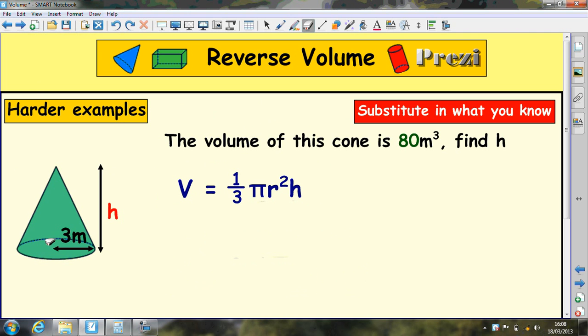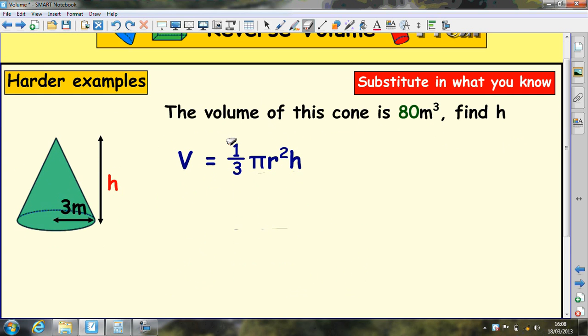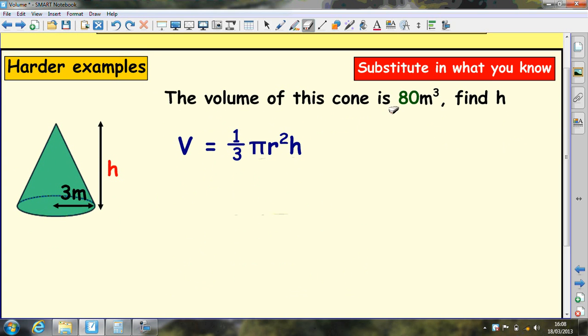Let's have a look at a cone, same idea. A reverse volume, we're asked for the height. So put the values in that you know. We know the volume's 80, so put 80 in. We have 1 third times, we know what pi is, the radius from here is 3. So we've got a 3 squared there. But we don't know what the height is, so we'll leave that as times h.